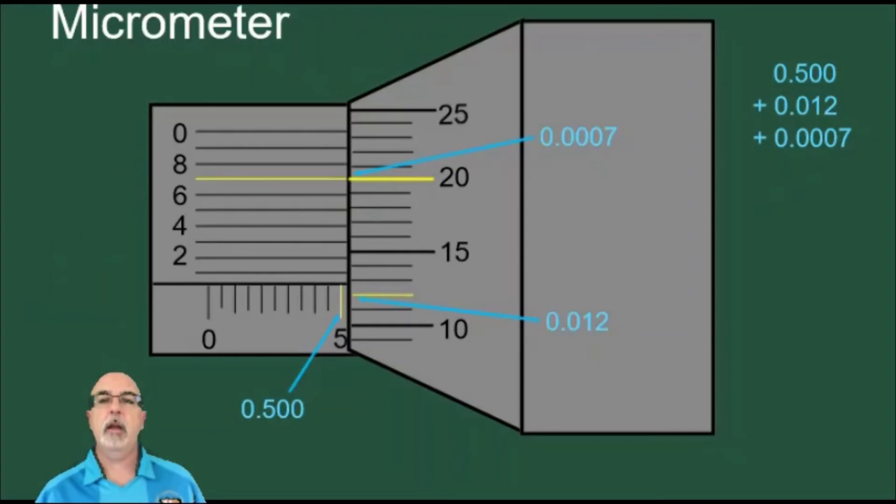Notice how the line for eight doesn't line up perfectly with the line for 21. It's a little bit above. And notice how the line for six also doesn't line up perfectly with the line for 19. It's a little bit below. We're looking for this pattern where the line that we use for our reading is neither above nor below, but it is surrounded by lines that are above and below. That's how we find the line we need.